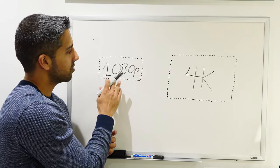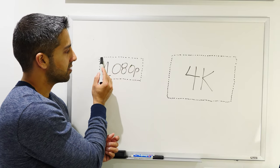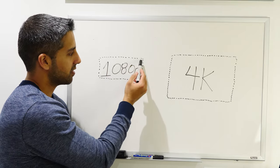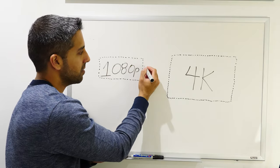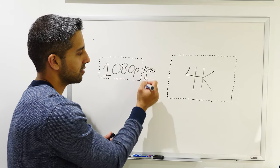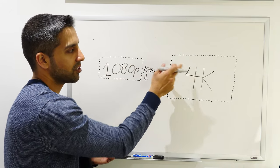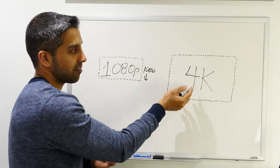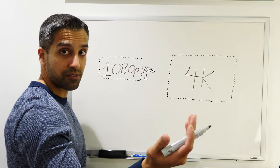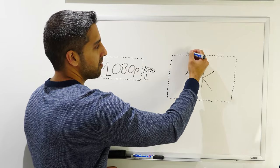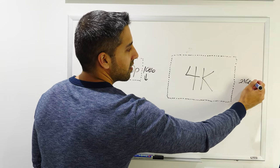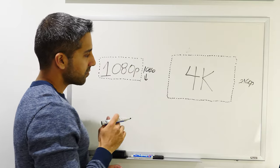1080p is actually 1920 pixels across by 1080 pixels down. That's where you get the name 1080p, because there's 1080 pixels going down. 4K is actually 2160p—a lot of people don't realize it. They think 4K is 4000p. That's incorrect. You can Google it if you don't believe me.